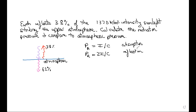For a given intensity, the radiation pressure when you have reflection is about twice the radiation pressure that you have when you have absorption. In this case we've got both reflection and absorption.